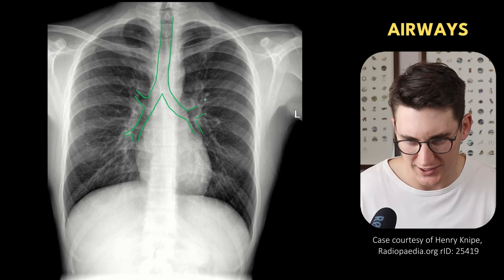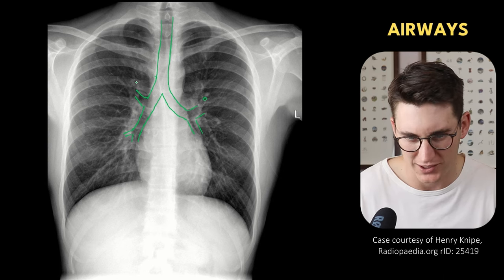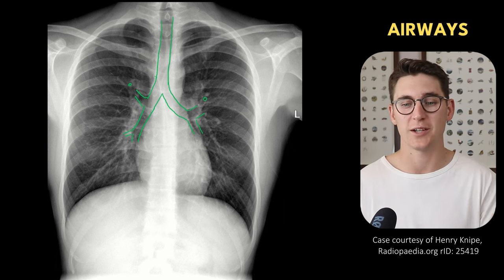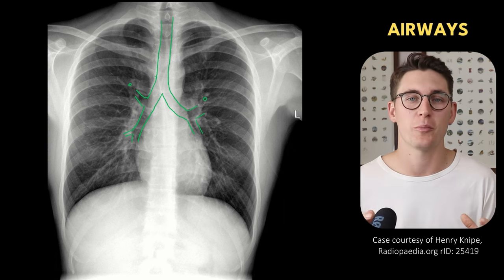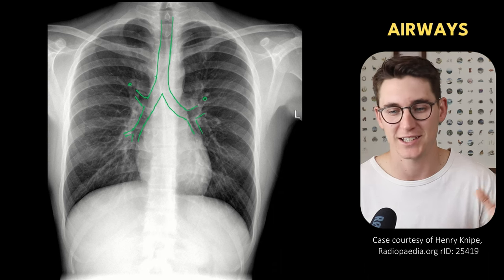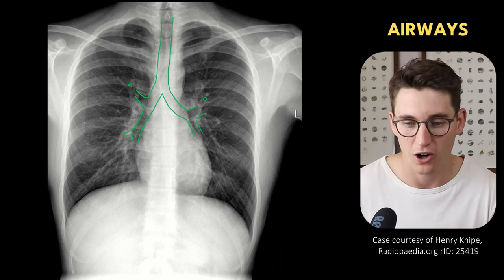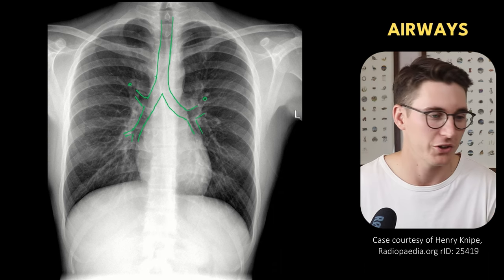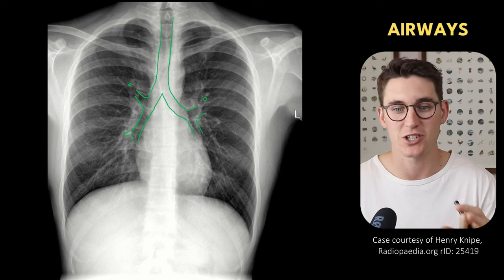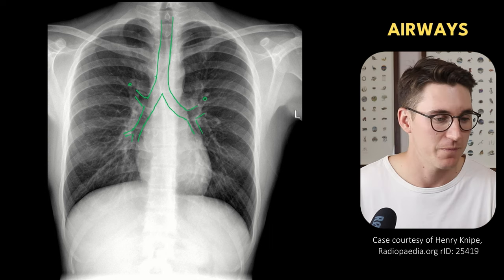Those are the major bronchi that we can see here. We can, if we look closely, see the end-on apical segments here of the superior lobes. And if you want to get more detail about the bronchopulmonary tree, there's a full video looking at the CT scan of the bronchopulmonary tree and the various different segments.